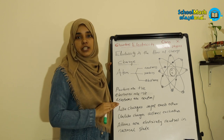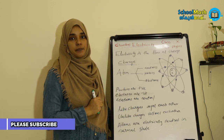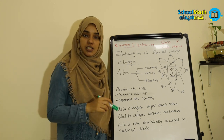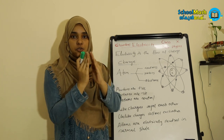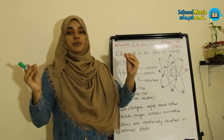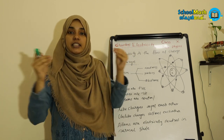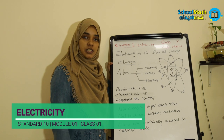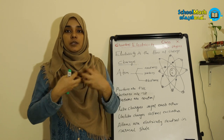Protons are positively charged and electrons are negatively charged. Like charges repel each other — if we add two negatively charged particles, they repel with the same force. That's why positive charge and negative charge produce an attractive force. That's why the protons and electrons are bonded.